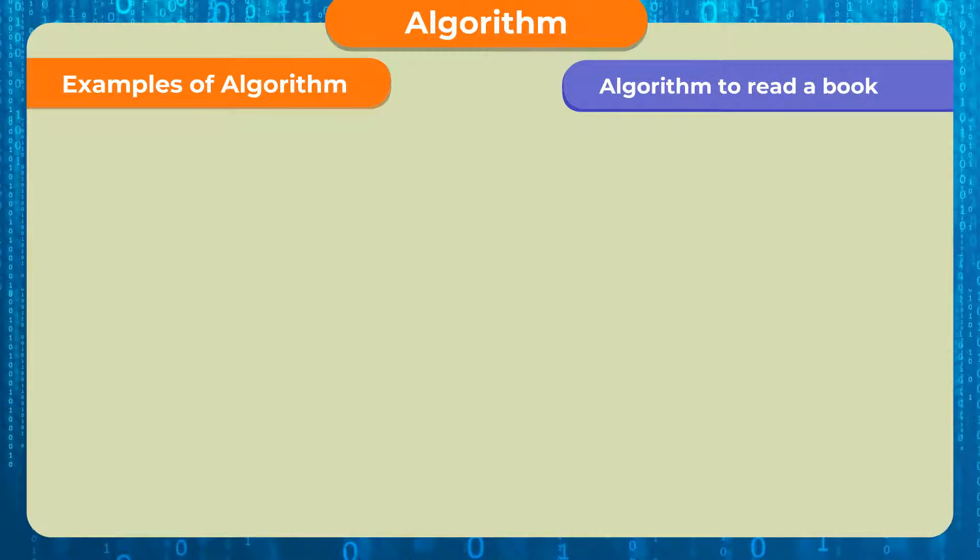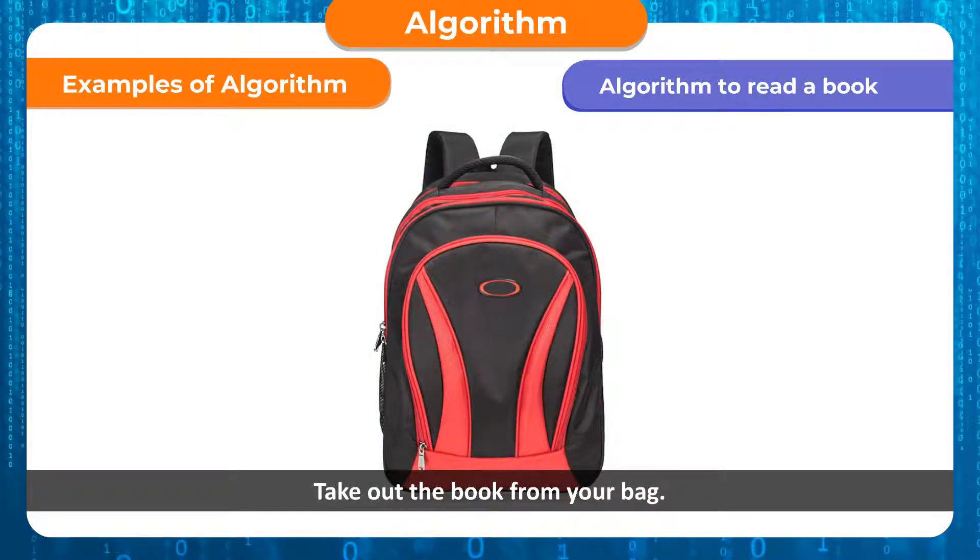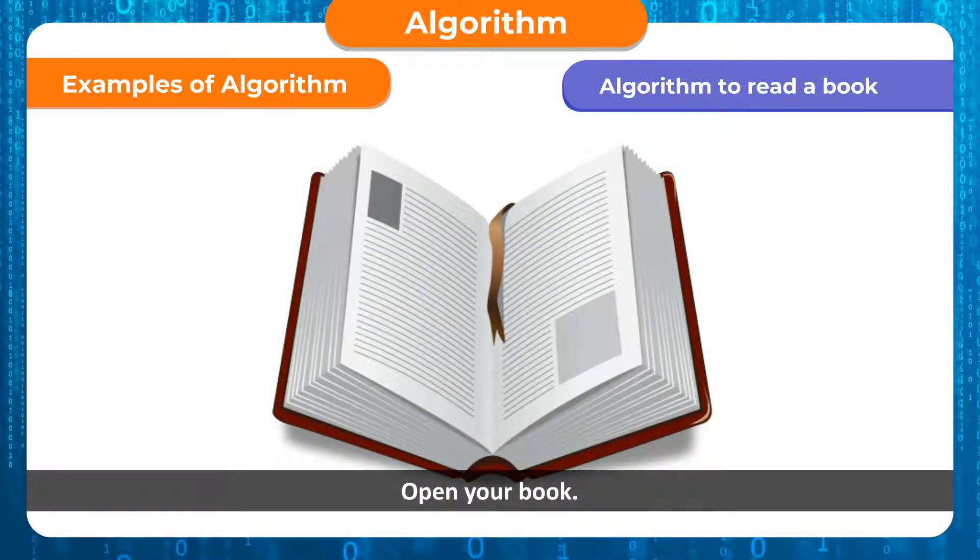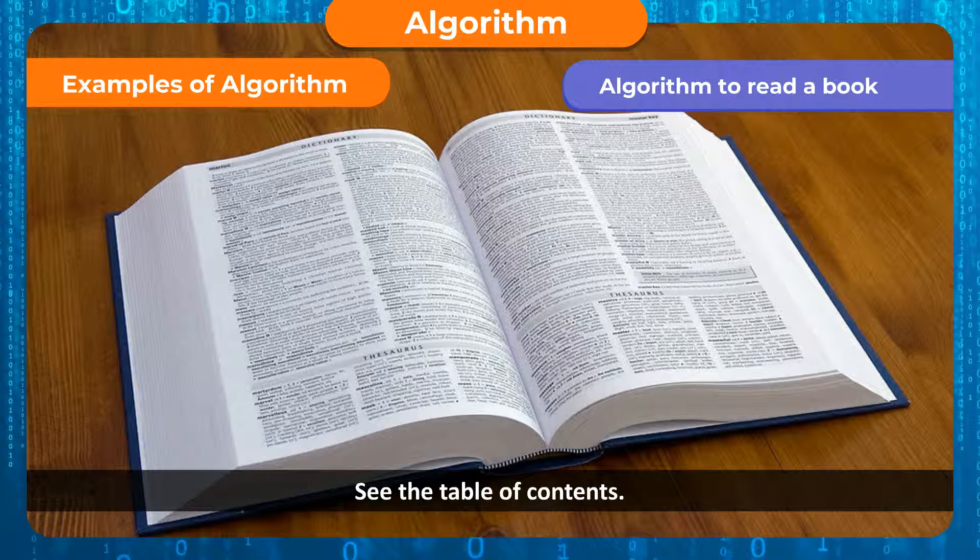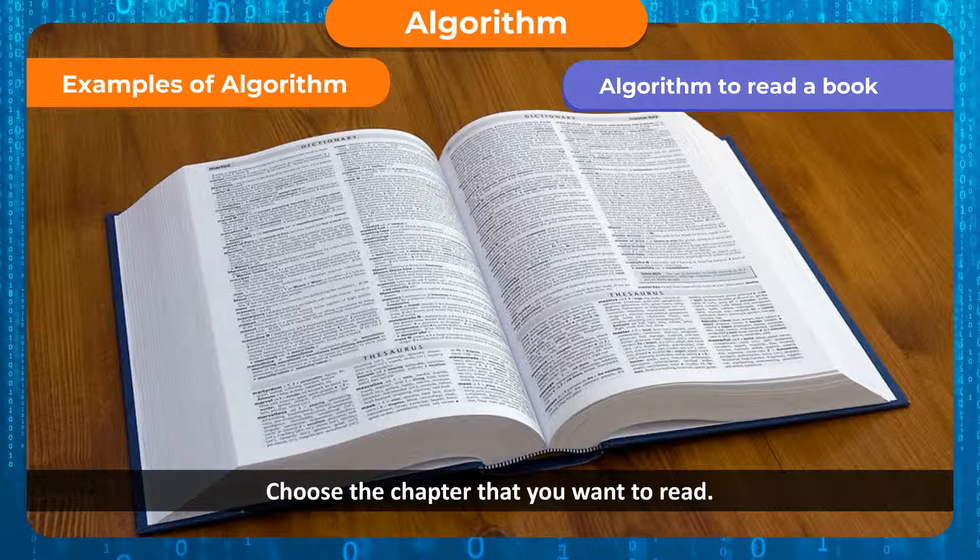Algorithm to read a book. Step 1: Start. Step 2: Take out the book from your bag. Step 3: Open your book. Step 4: See the table of contents. Step 5: Choose the chapter that you want to read. Step 6: Open your chosen chapter and start reading your lesson. Step 7: Stop where you have finished reading the entire lesson.